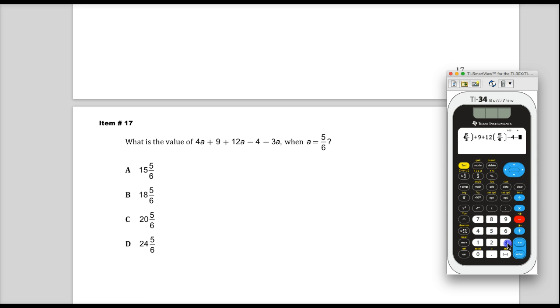And then minus 3 parentheses. And every time that it's there, it's always going to be 5 over 6. Click to the right, click out, and you're done. Then you just hit enter and you get 15 and 5 sixths. So the answer to this one is A.